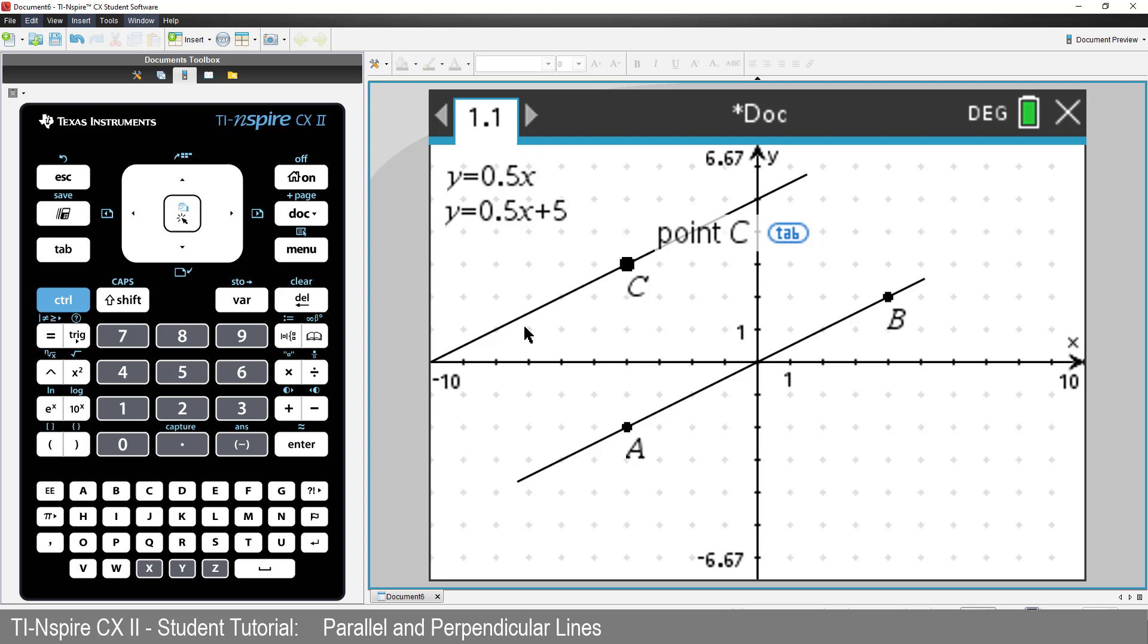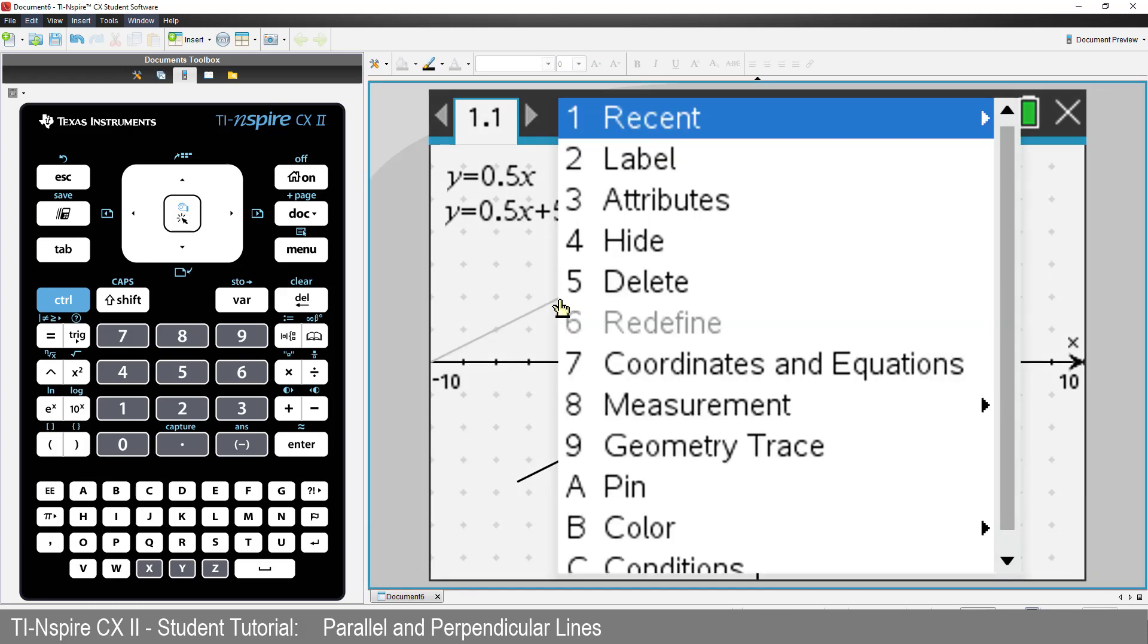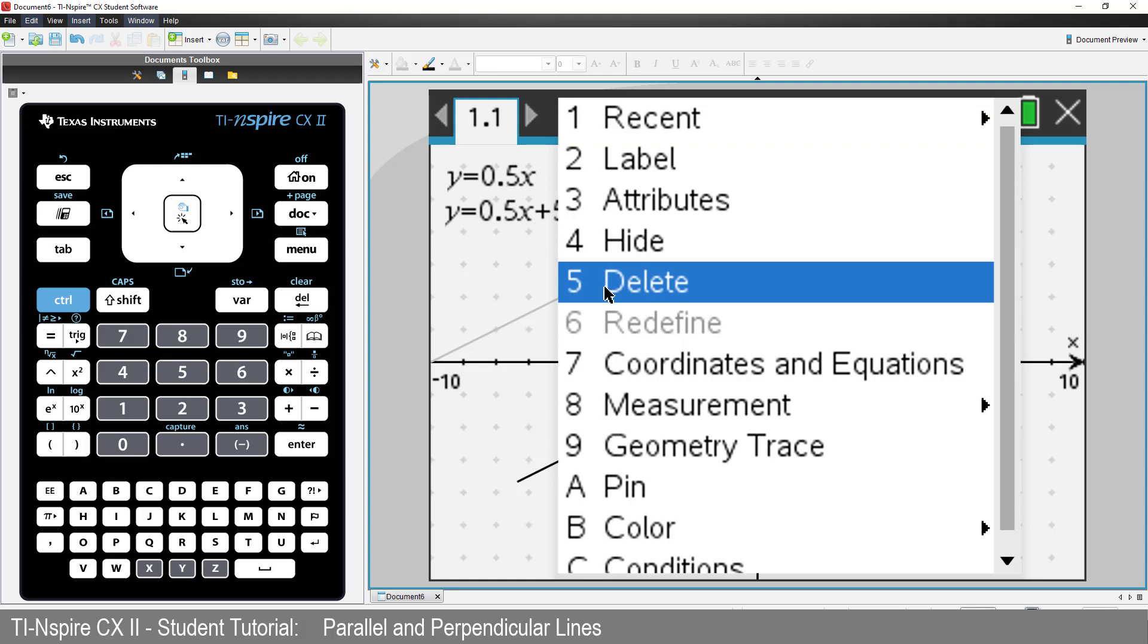Now let's delete the parallel line. Not the point, just the line. Move the cursor over the line. Press Control followed by Menu and select Delete.